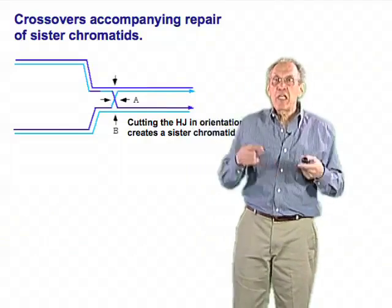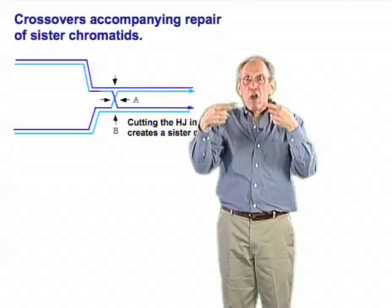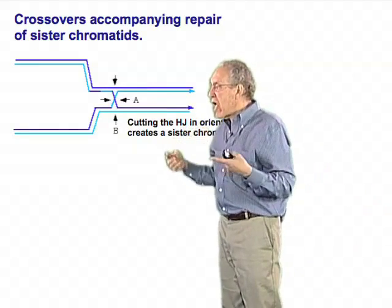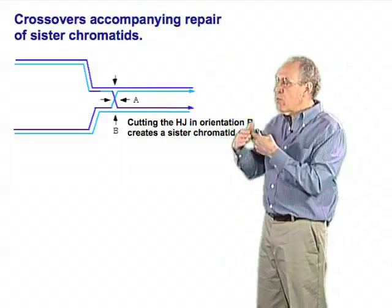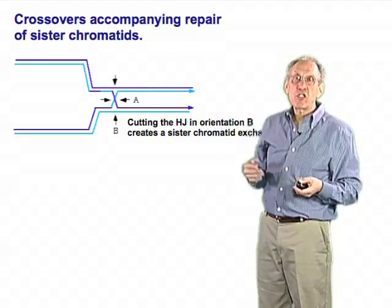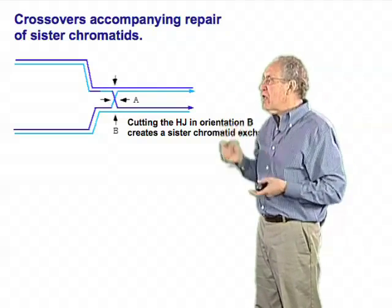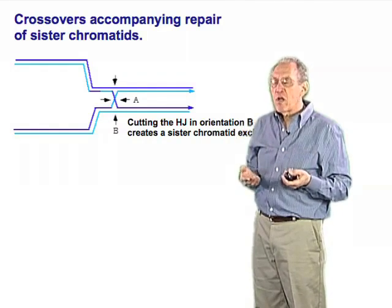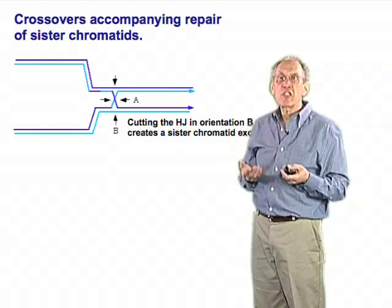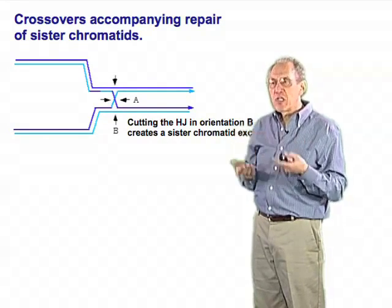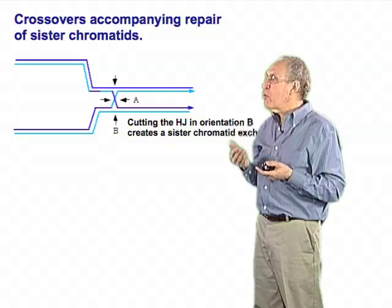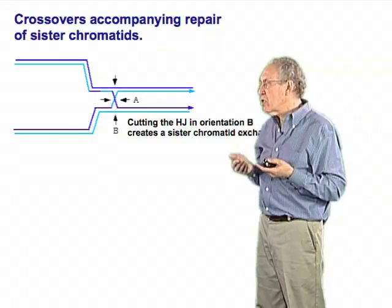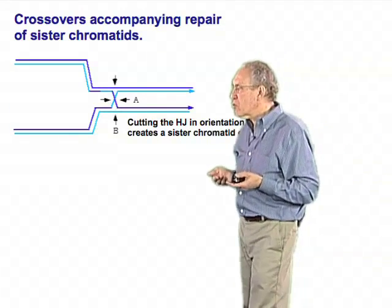Holliday junctions can be cleaved either on the top strands or the cross strands, and the two outcomes are different. If they cross in the A orientation, these two molecules come apart without any exchanges. But if they cut in the B orientation, there's going to be a crossover — and here we call that crossover a sister chromatid exchange, because we're looking at the case where we have restarted DNA replication to allow the formation of two sister chromatids.